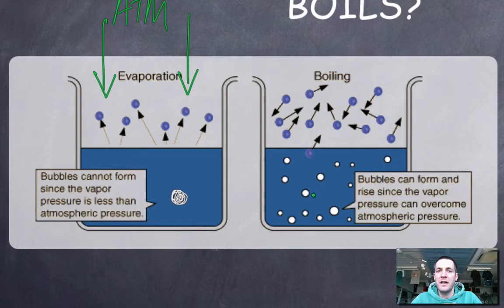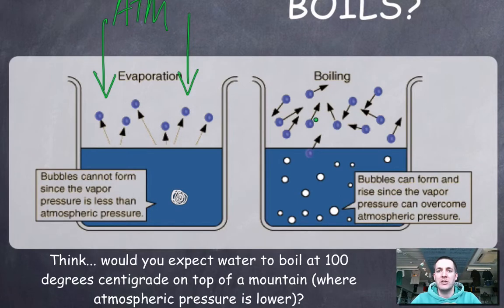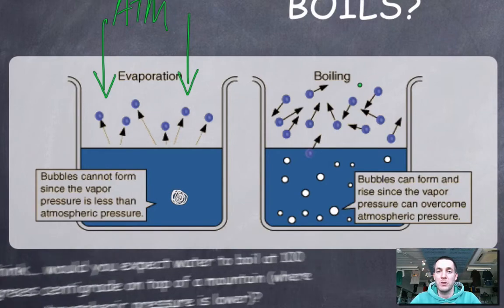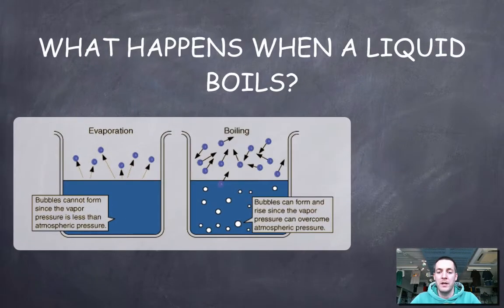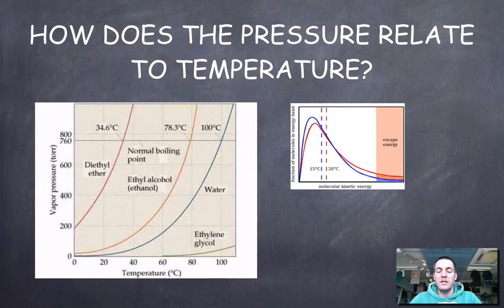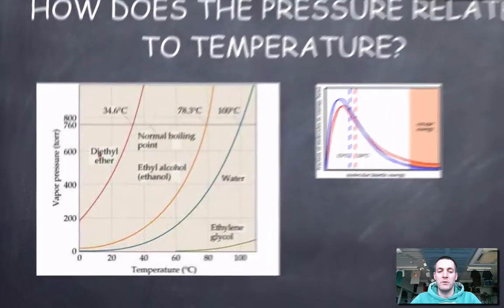As soon as the vapor pressure reaches atmospheric pressure, the bubbles have enough pressure to sustain themselves and won't be collapsed by the outside pressure, so the liquid starts to boil. A liquid boils when its vapor pressure reaches atmospheric pressure — and bear in mind that atmospheric pressure can change depending on where you are.